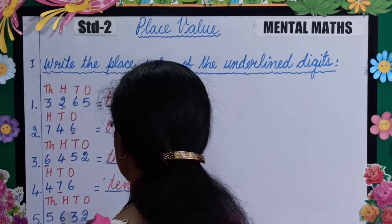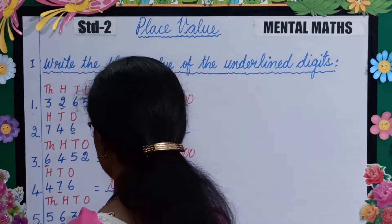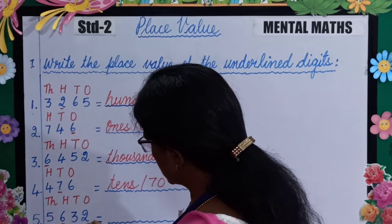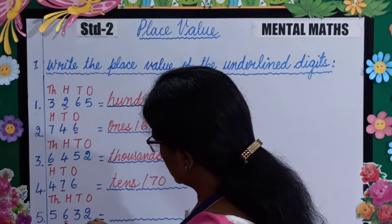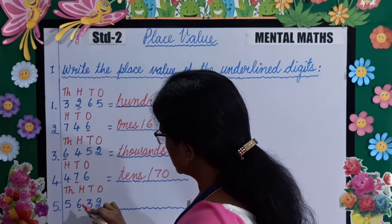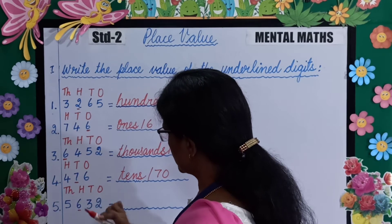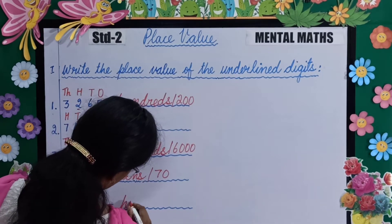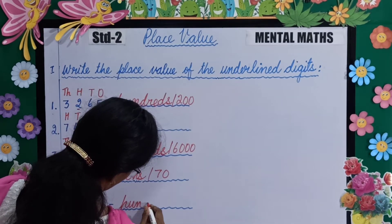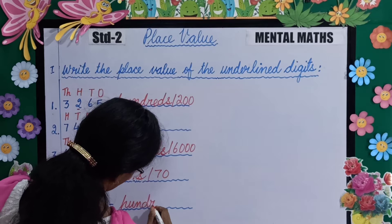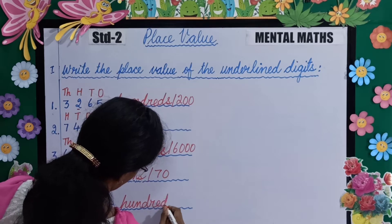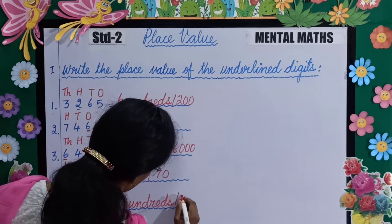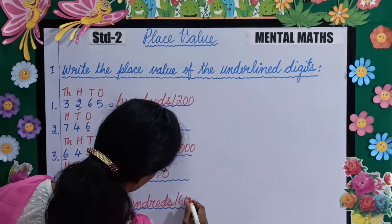Next, 5632 — the place value of 6 in this number is 100. So you will write here hundreds or 600.